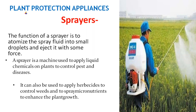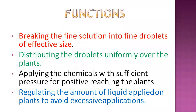The equipment used for spraying chemicals is known as a sprayer. The functions of a sprayer are: first, breaking the fine solution into fine droplets of effective size; second, distributing the droplets uniformly over the plant parts to control many organisms like plant diseases, insects, or weeds; and third, applying the chemicals with sufficient pressure for positive reaching of the target site to destroy attacking agents.